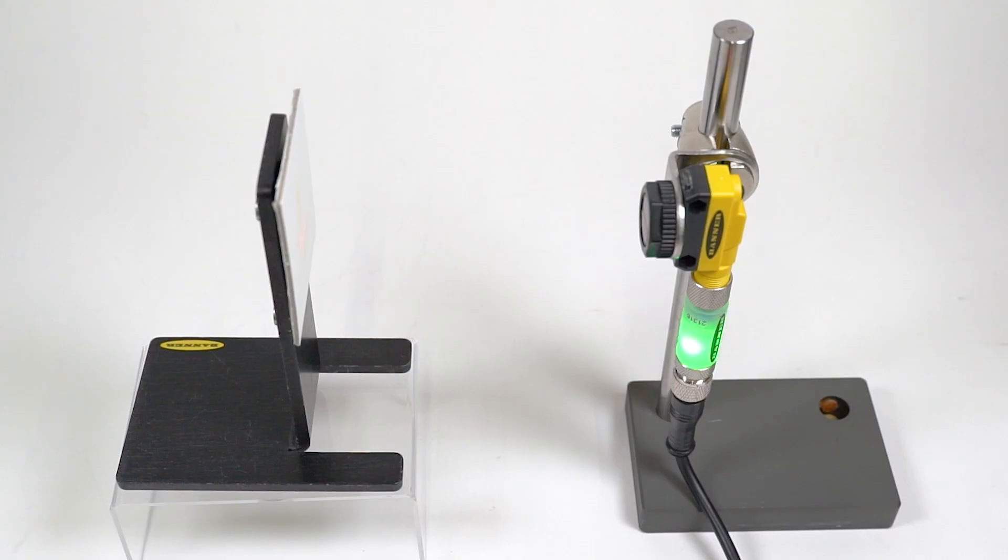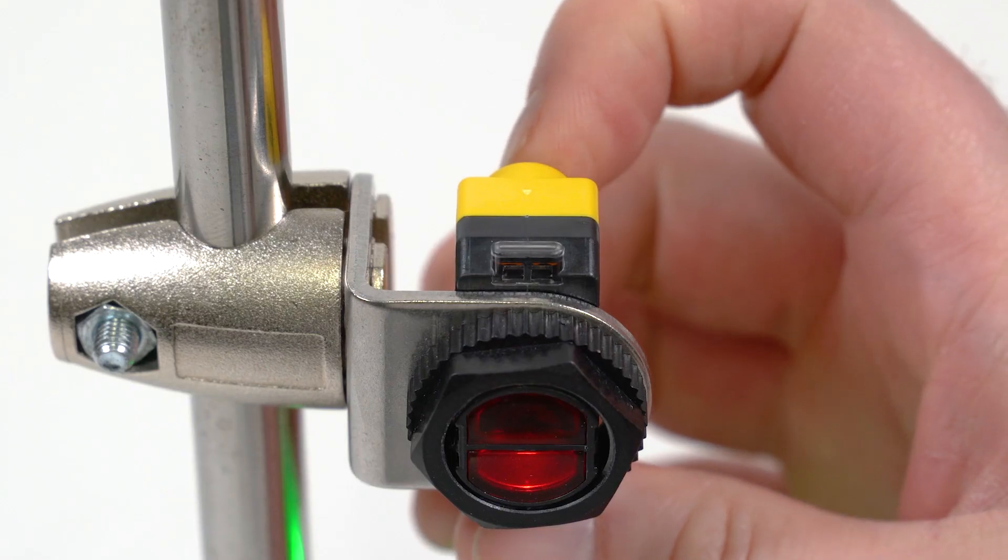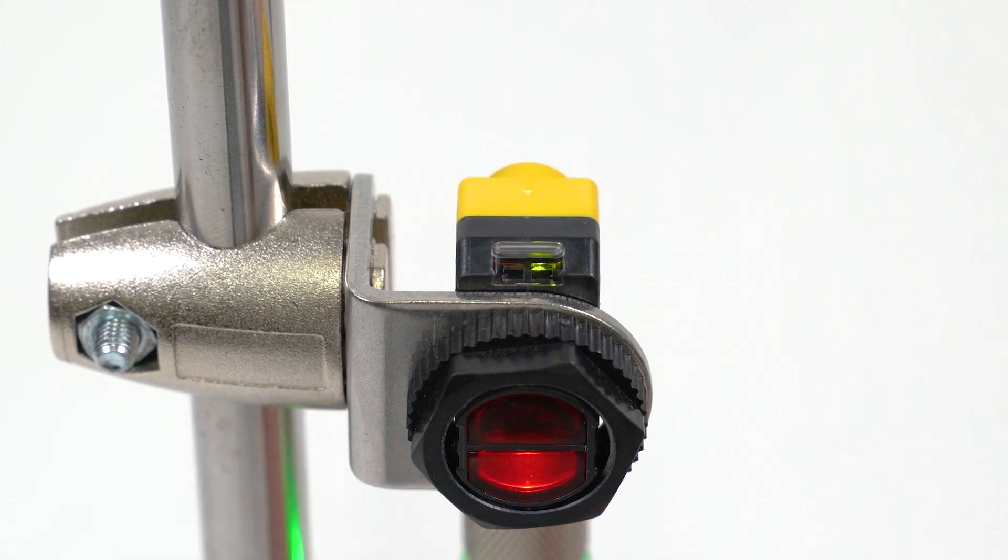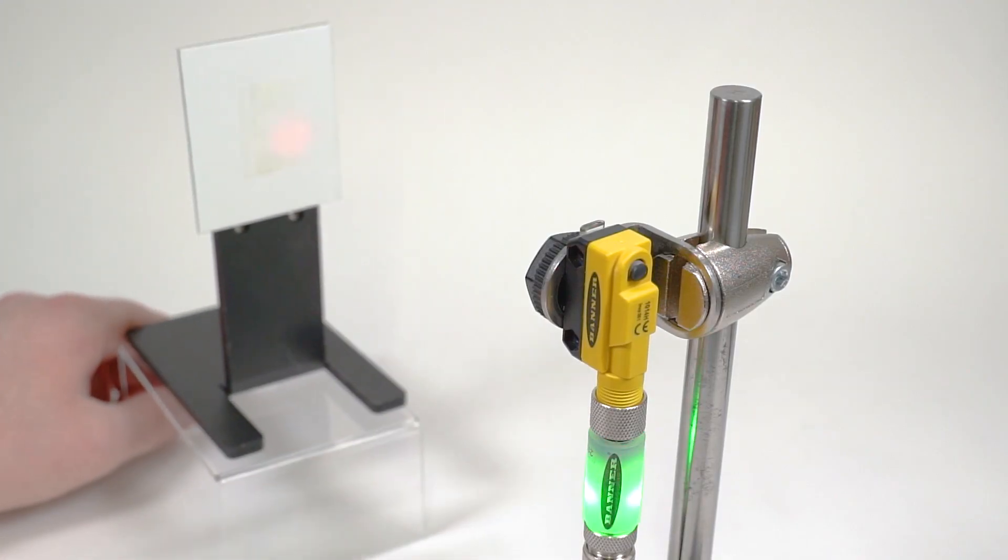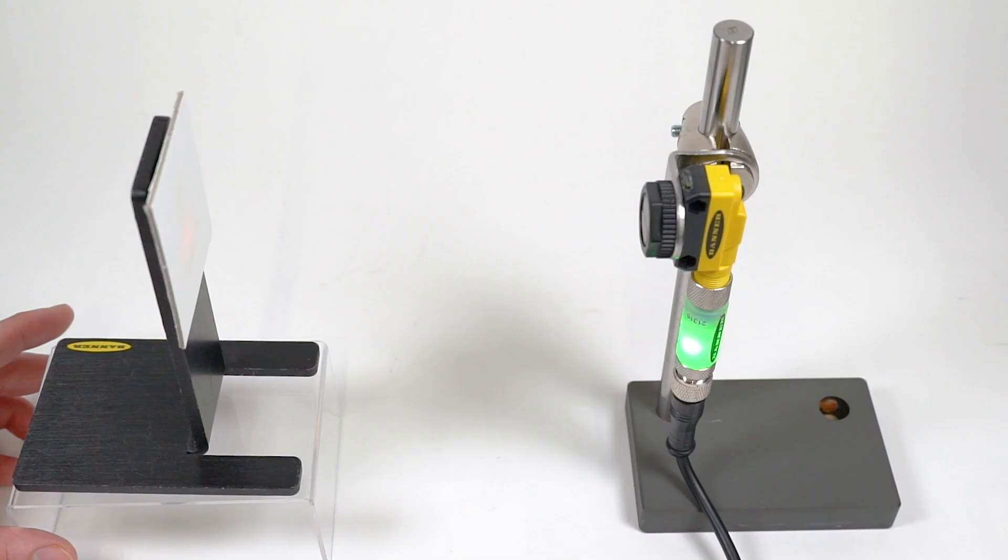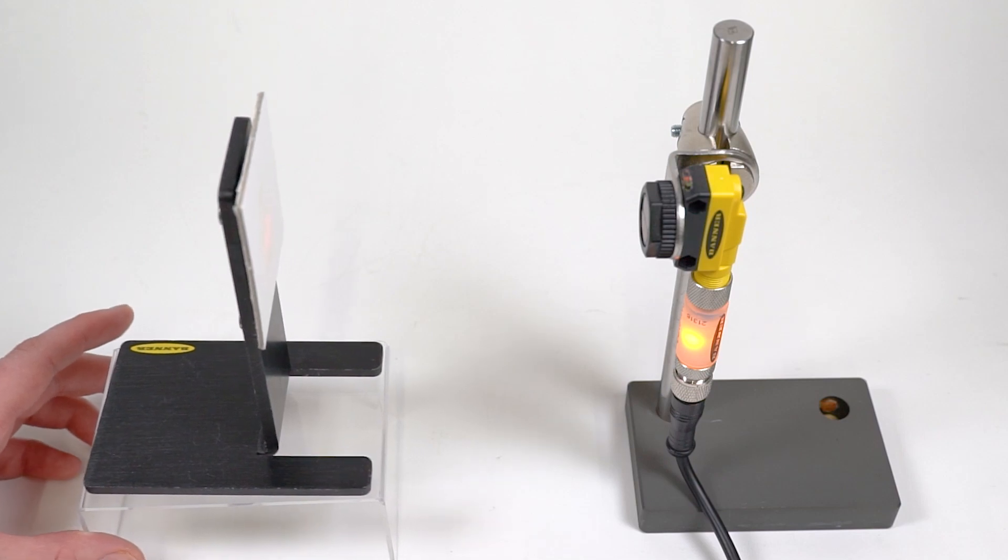Present the target condition and press the button four times consecutively. The power LED will flash three times and then turn solid, indicating that the sensor has been taught successfully.